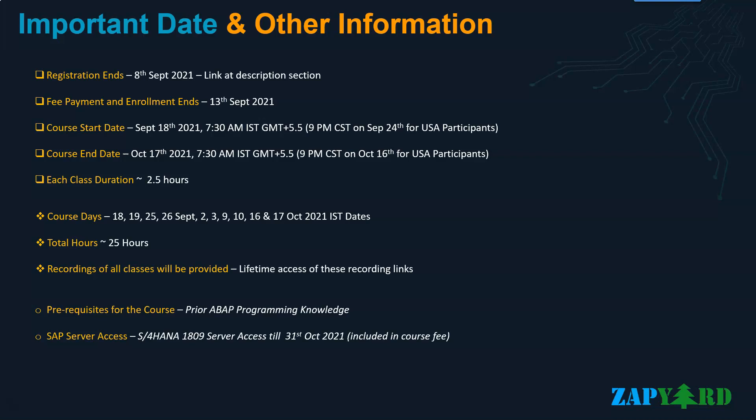The link to enroll for this training is in the description section of this video. Each class will be a little over 2.5 hours and the whole course will be around 25 hours. Recordings of the class will be provided after every live session and participants will have lifetime access to these recordings. The S/4HANA 1909 server access will be provided till October 31st, 2021. The server access is included in the training fee and you do not need to pay anything extra for it. Please check the description section of this video for the course fee and other details.